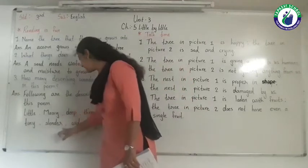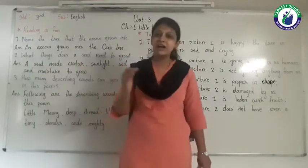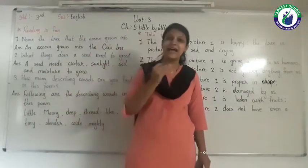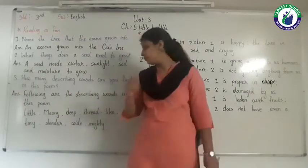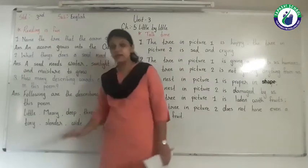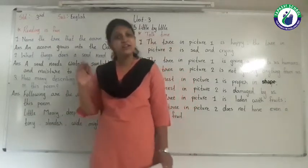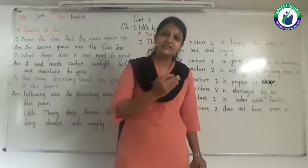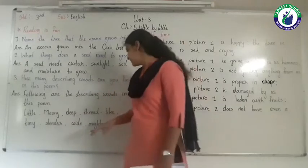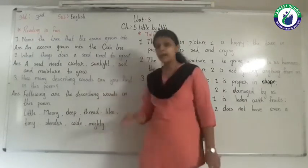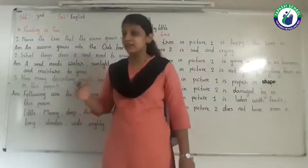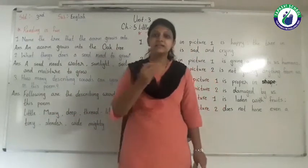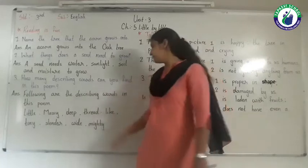Next, 'slender branches' - branches are a noun and 'slender' is the describing word. Next, 'wide branches' - branches are a noun and 'wide' is the describing word. Next, 'mighty' - that noun and 'mighty' is the describing word.